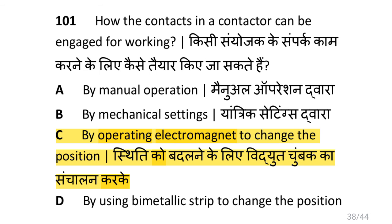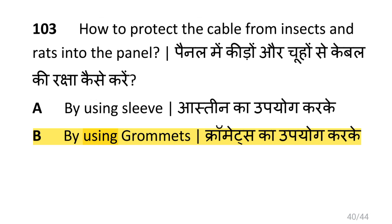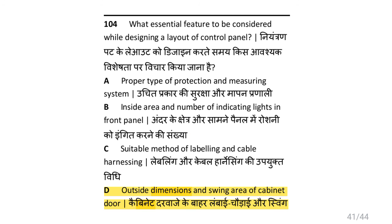How can the contacts in a contactor be engaged or operated? i.e. by operating the electromagnet to change the position. Which device prevents flare out of stripped and stranded cable in the panel board? i.e. lugs and thimbles. How to protect the cable from insects and rats entering the panels? By using grommets. What essential features are to be considered while designing a layout of a control panel? i.e. outside dimension and swing area of the cabinet door.